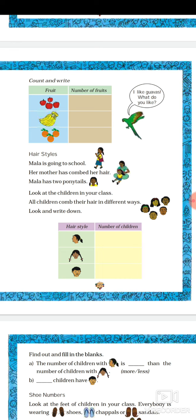Now we will study about hairstyle. Mala is going to school and her mother has combed her hair. Mala has two ponytails. Look at the children in your class — all children comb their hair in different ways. Look and write down the hairstyle and how many children have each type of hairstyle.